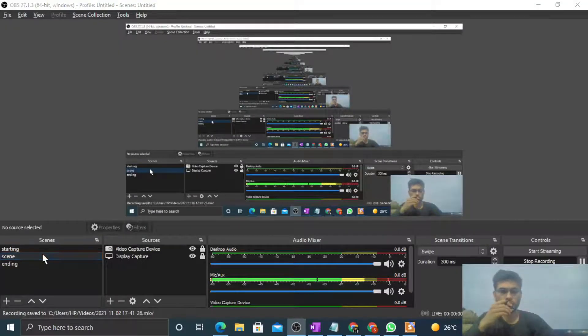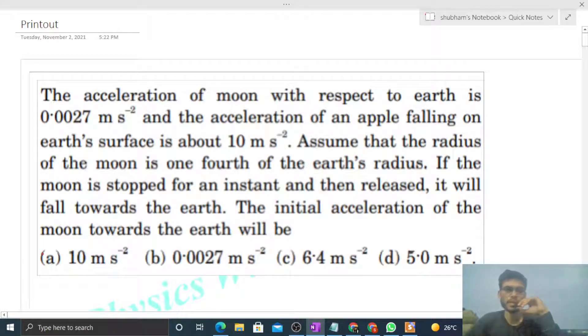Okay, hi everyone. Today let's discuss this interesting problem. The acceleration of moon with respect to earth is 0.0027 meters per second squared, and the acceleration of an apple falling on earth's surface is about 10 meters per second squared. Assume that the radius of the moon is one fourth of the earth's radius. If the moon is stopped for an instant and then released, it will fall towards the earth. The initial acceleration of the moon towards the earth will be...